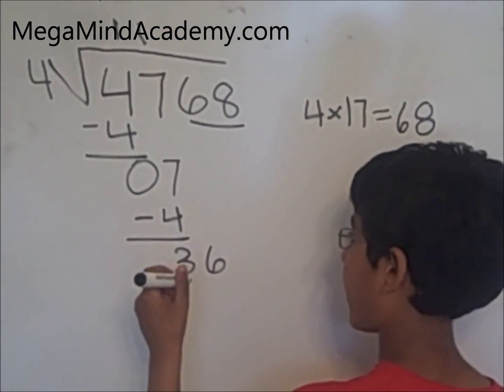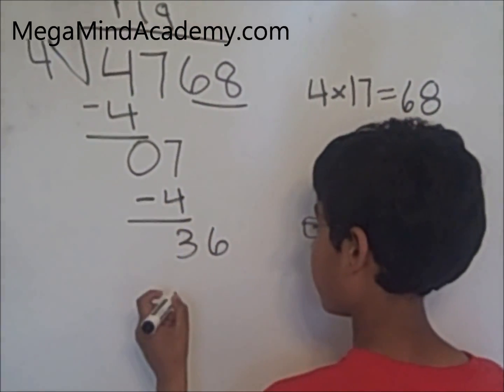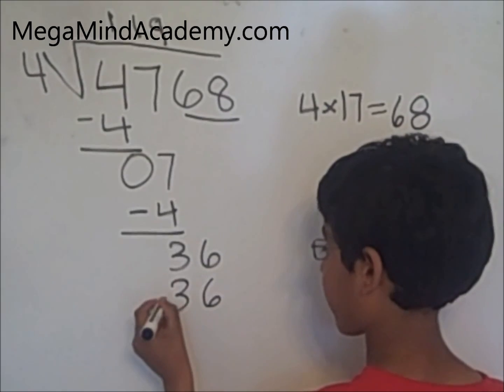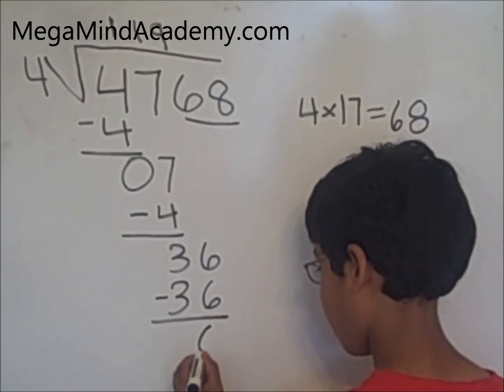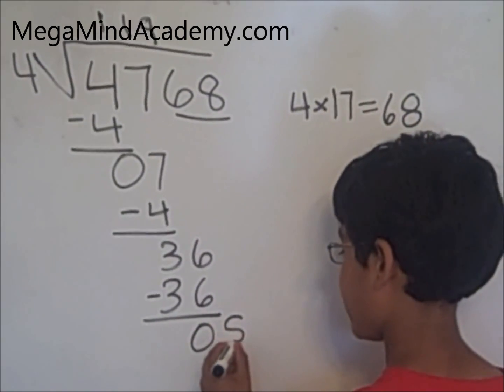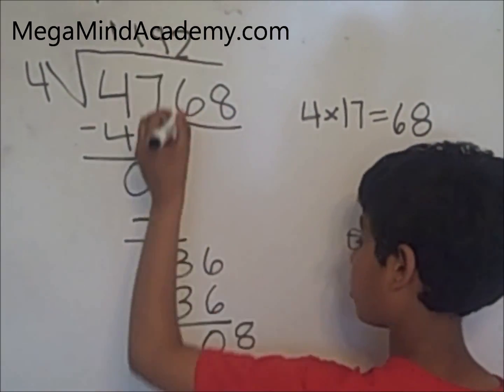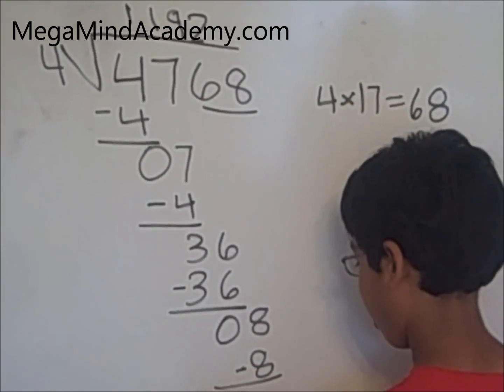Four times nine equals 36. You subtract 36 from 36 and you get zero. Now you bring eight down. Four times two equals eight. So you subtract eight from eight and you get zero.